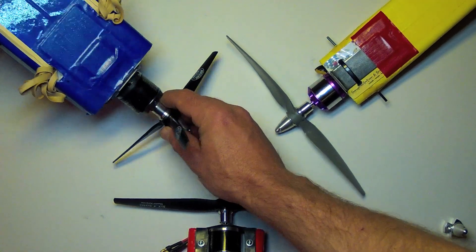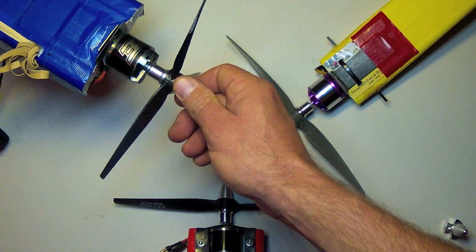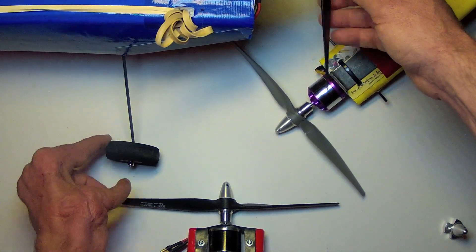Also, an 1800 kV is good for a narrower diameter prop where ground clearance is needed if you're using landing gear.